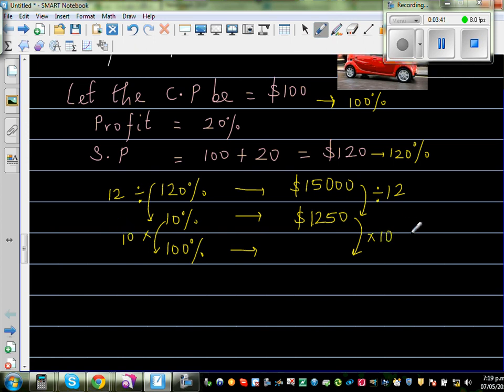So we do the same thing here, times it by 10. It is 1,000—sorry, I have to put two zeros, which is 12,500. So the cost price of the car is $12,500.